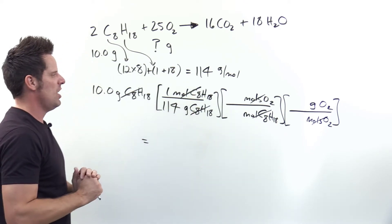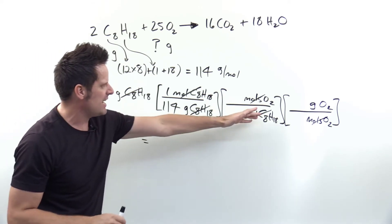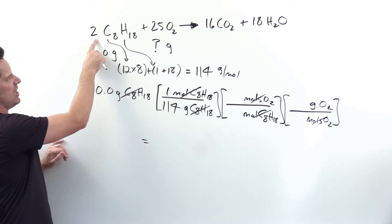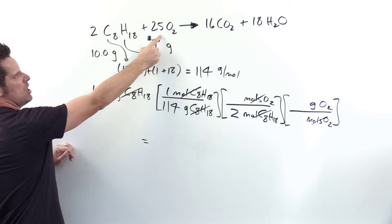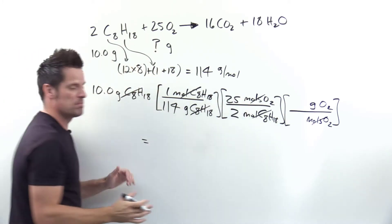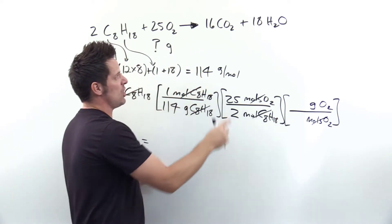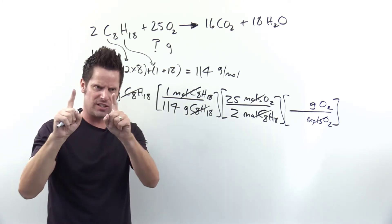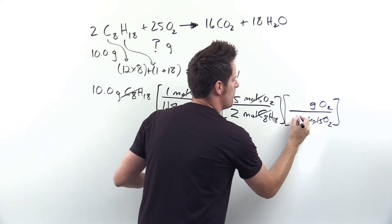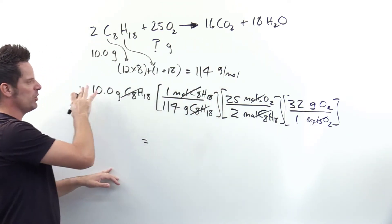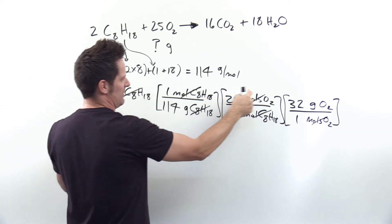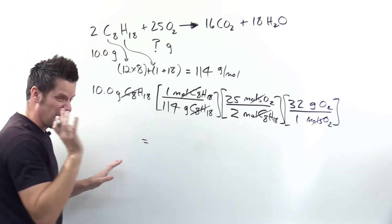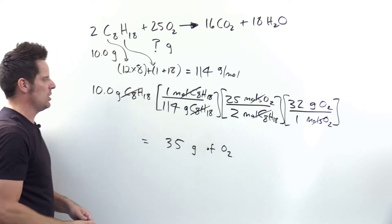For every one mole of octane I have 114 grams of octane. The ratio of moles of octane to moles of O2 comes from the balanced equation coefficients: 2 next to octane, 25 next to O2. For the molecular weight of O2: each oxygen weighs 16, and there are two oxygen atoms per molecule, so 2 × 16 = 32 — one mole of O2 weighs 32 grams. Multiplying through: 10.0 × 25 × 32 ÷ 114 ÷ 2 gives a final answer of 35 grams of O2.